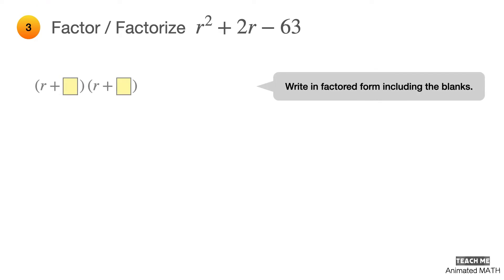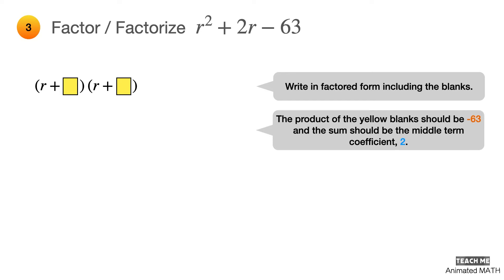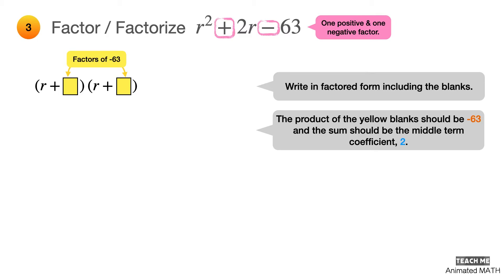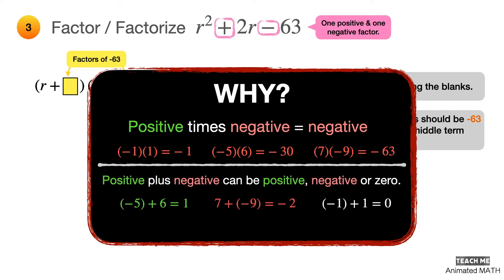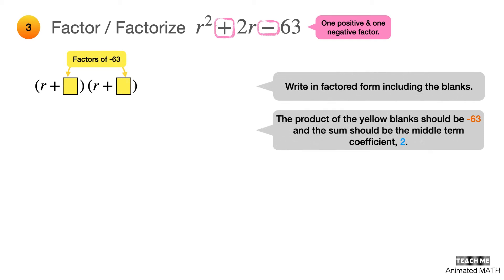Write the trinomial in factored form, including the blanks. Multiplying the yellow blanks should be equal to negative 63, and adding them should be equal to the middle term coefficient 2. Since the middle term is positive and the last term is negative, it means that one factor is positive and one factor is negative. Because if you multiply a positive and a negative number, the product will always be negative, and if you add a positive and a negative number, the sum can be positive, negative, or even zero. For problem number 3, the sum is positive. Let's list all factors of negative 63 and the possible combinations for the yellow blanks.